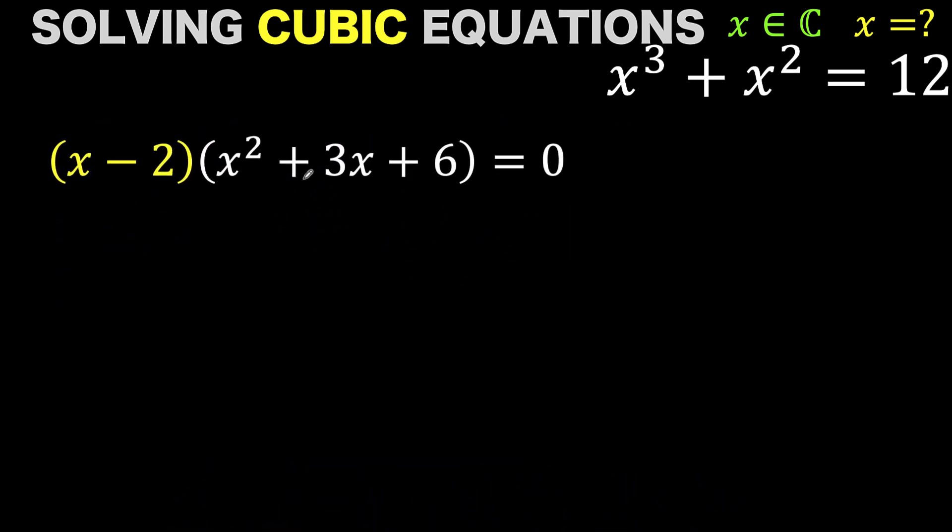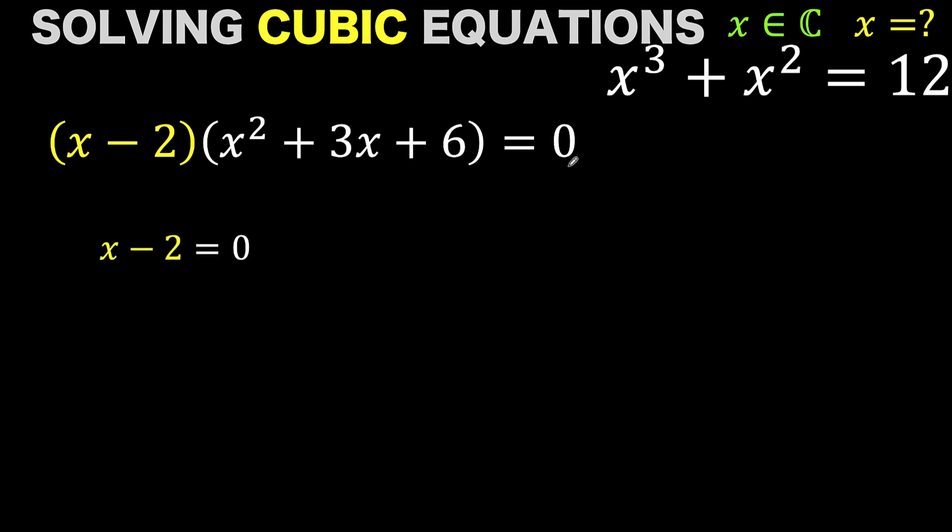Now from here, we are going to apply the zero product property of multiplication. We have here a product. The quantity (x - 2) times the quantity (x² + 3x + 6) and the product is equal to 0. So from the zero product property, each of these factors could be equated to 0. So solving for x now here, we found that x is equal to positive 2.